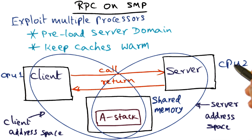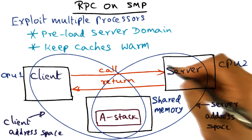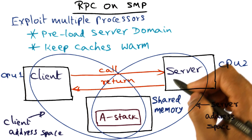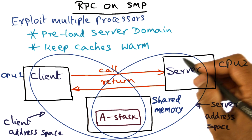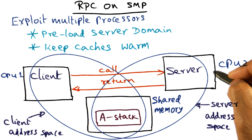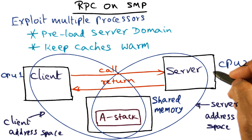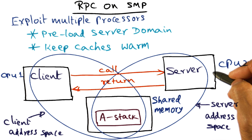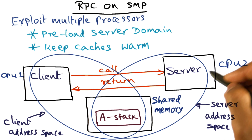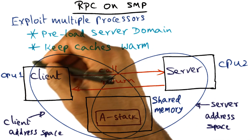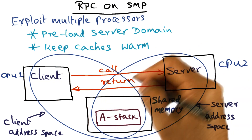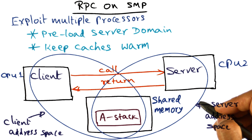Since the server has been preloaded in the CPU, the caches will be warm, and therefore we can avoid, reduce, or mitigate the impact of loss of locality that occurs when you go from one protection domain to another protection domain.